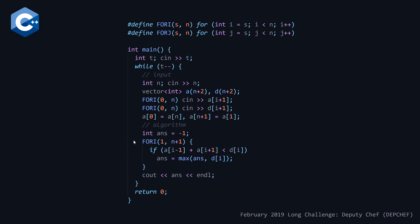We initialize the answer to negative one in case no soldier can defend themselves. Then we loop from 1 to n, checking whether the combined attacks of the soldiers at i-1 and i+1 are less than the defense of the current soldier. If so, we set the answer to be the maximum of the current answer and that soldier's defense value. Once the for loop finishes, we output the answer.